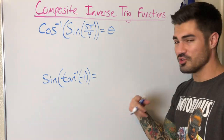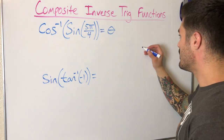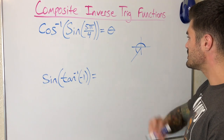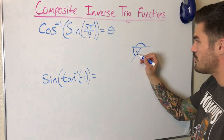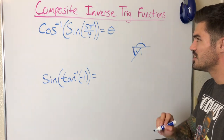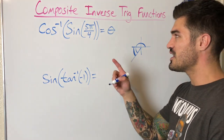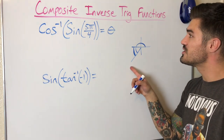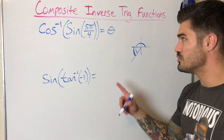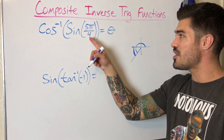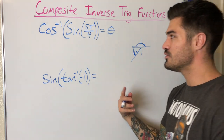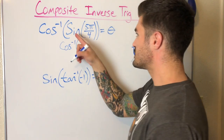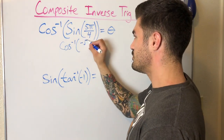Let's go ahead and find sine of 5π/4. Maybe you're looking at your unit circle and already know it, but I always think of it in terms of reference angles. If I wrap around, it's in the third quadrant and the reference angle is π/4 — always draw from the x-axis. I know π/4 for sine gives me √2/2, and since I'm in the third quadrant it's negative, so it's negative √2/2. So I can replace sine of 5π/4 with negative √2/2.